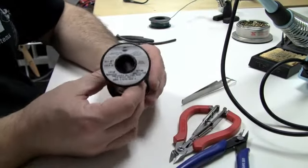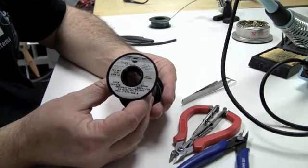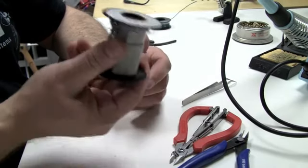For soldering, you're going to want to use good solder. This is Kester. It's a very good solder. It's about $40 a roll.